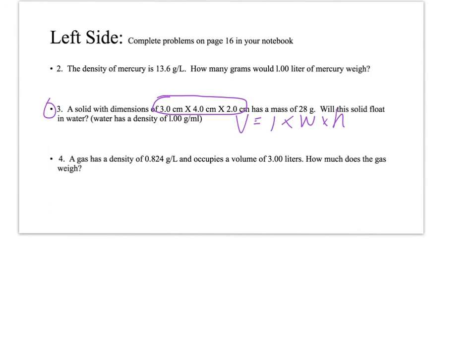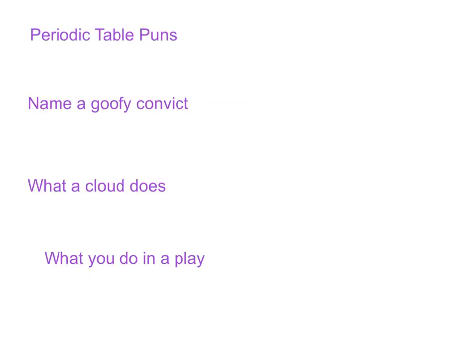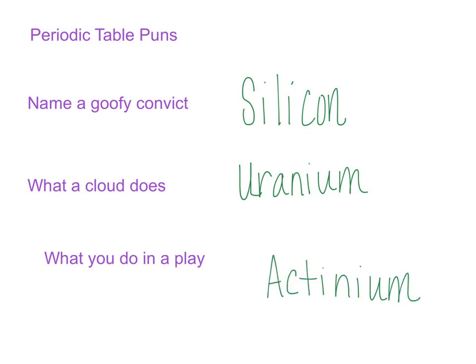Instead of jokes this time, we're going to do periodic table puns. So all the answers to these are going to be periodic symbols. We're going to start with one of my all time favorites. What is the name of a goofy convict? He is a silly con. And the next one, what a cloud does? It uraniums. And then the last one, what you do in a play? In a play, you act in them. Alright, that ends our flipped lesson. See you in class. Have a good day.